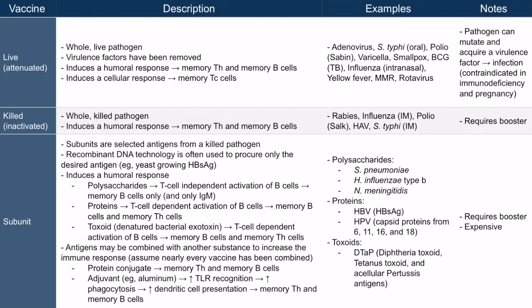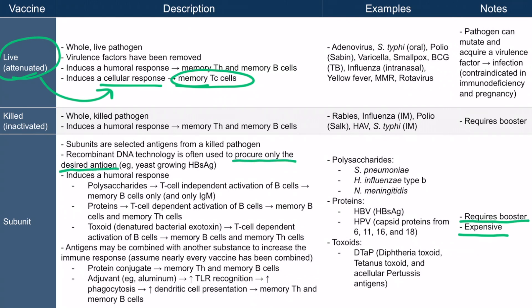Subunit vaccines require booster shots because the immune response wasn't dramatic enough to give the patient lifelong immunity — the patient wasn't actually infected with a living pathogen. They also didn't form any memory cytotoxic T cells, which only occur with live vaccines because they induce a cellular response by infecting the dendritic cell. Additionally, subunit vaccines are expensive to make, as developers need to procure only selected antigens using recombinant DNA technology.